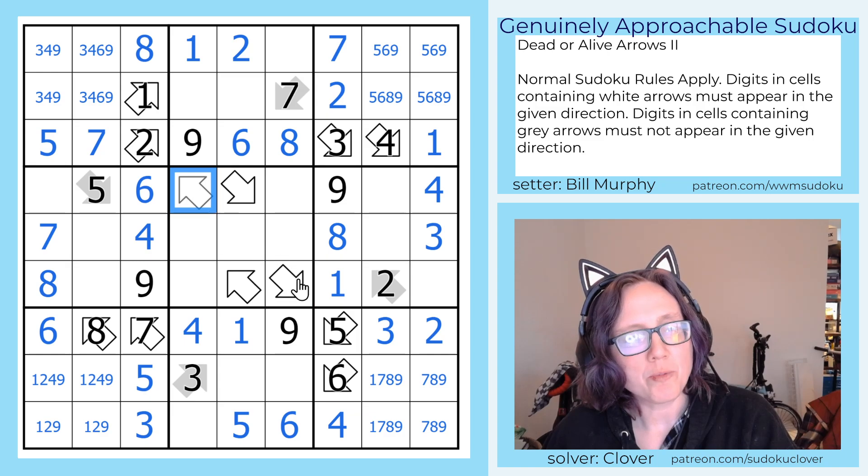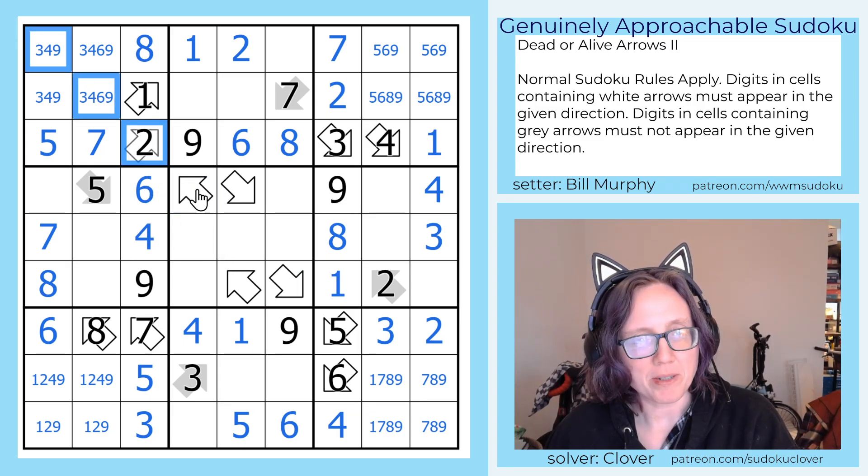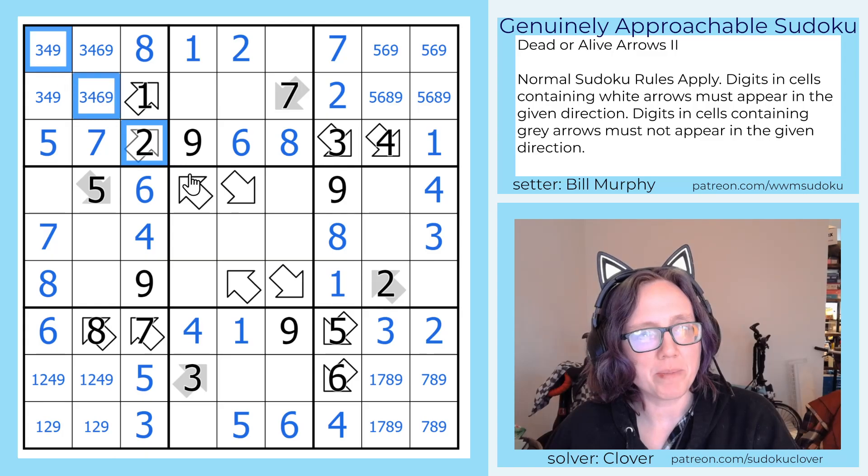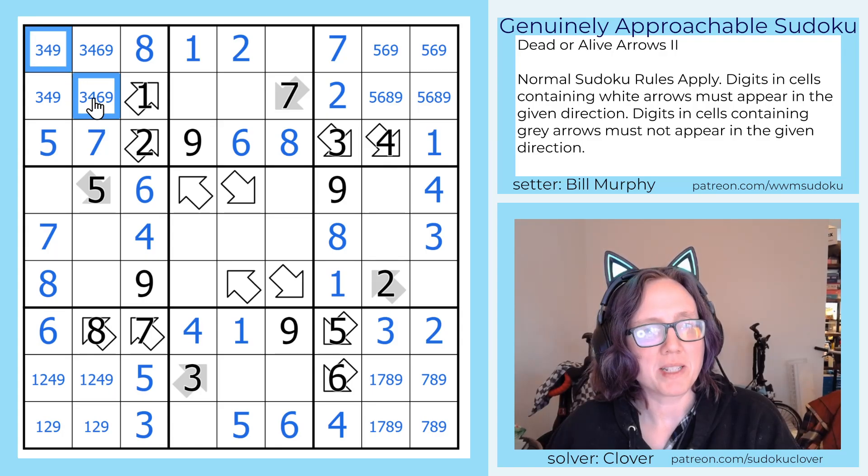I'm going to make a couple of quick eliminations just based on what's already in the rows and columns. And then we're going to turn our attention to these two white arrows. So this arrow points up here and whatever is in it has to also be in one of these cells. So it's either a 2 or it is a 3, 4, 6, or 9 because those are the only digits that can possibly live in these cells.